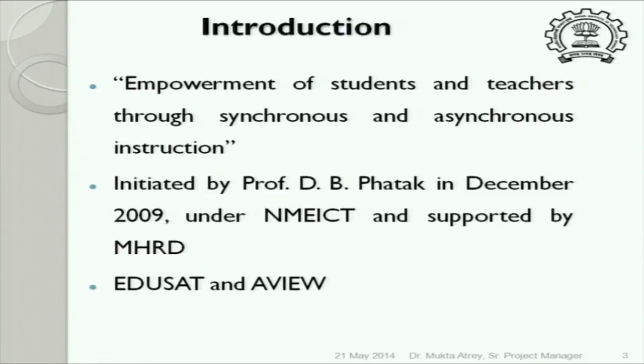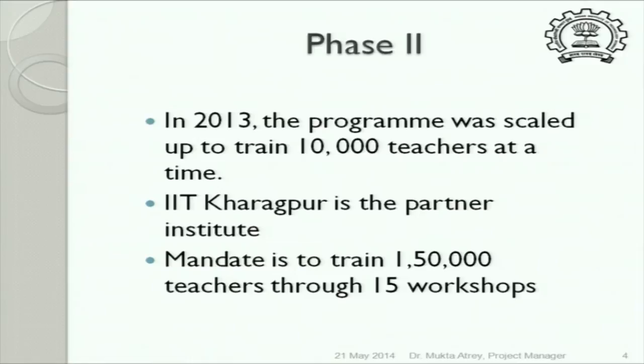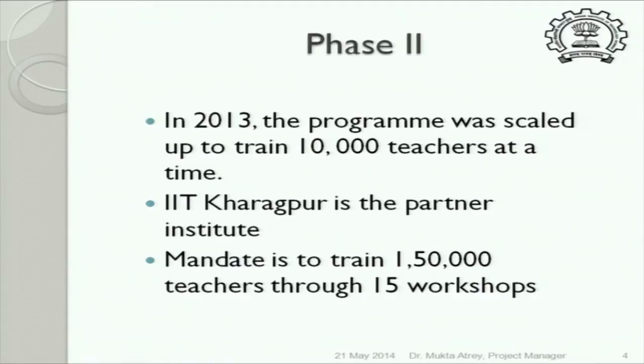At the same time, Amrita University had come up with new software called AVU, also under the National Mission on Education. We tied up with them and in 2010 completely moved over to AVU, which gave us the freedom to go to whichever college could put up the required infrastructure. In 2013 we started phase two with IIT Kharagpur, and we have a mandate of training about 150,000 teachers in 15 workshops over two years.